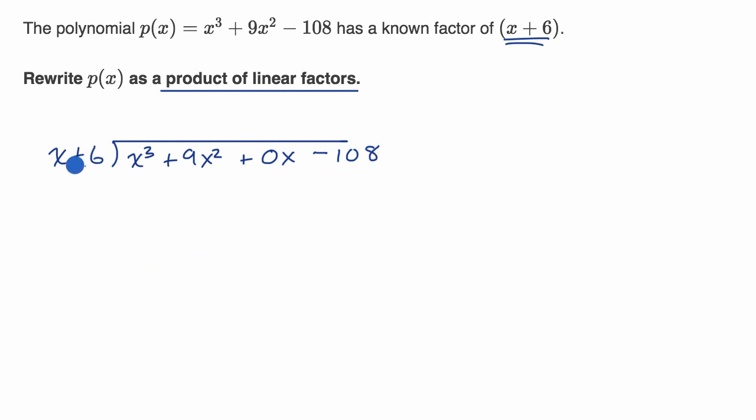And so then you say, all right, let's look at the highest degree terms. X goes into x³, x² times. X² times 6 is 6x². X² times x is x³. We want to subtract. We've done this multiple times, so I'm going a little bit faster than normal. Those cancel out. 9x² - 6x² is 3x². Bring down that 0x.